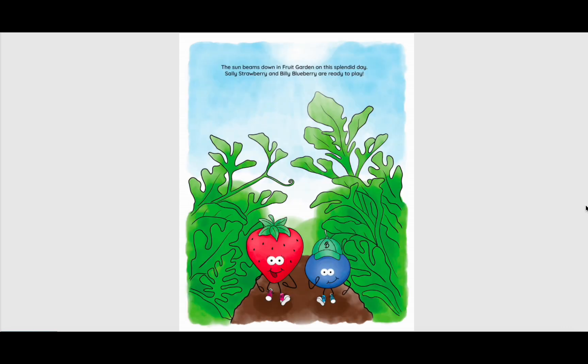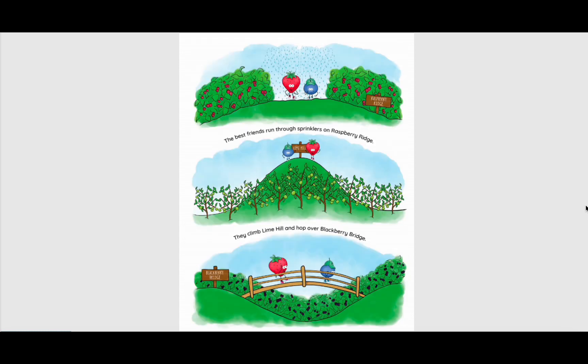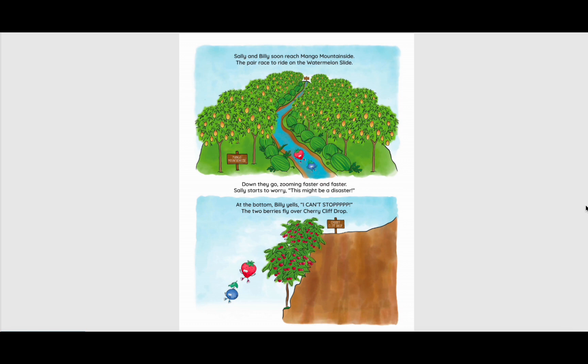The sun beams down in a fruit garden on this splendid day. Sally Strawberry and Billy Blueberry are ready to play. The best friends run through sprinklers on Raspberry Ridge. They climb Lime Hill and hop over Blackberry Bridge. Sally and Billy soon reach Mango Mountainside. The pair race to ride on the watermelon slide. Down they go, zooming faster and faster. Sally starts to worry, this might be a disaster.